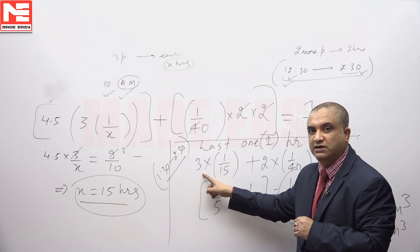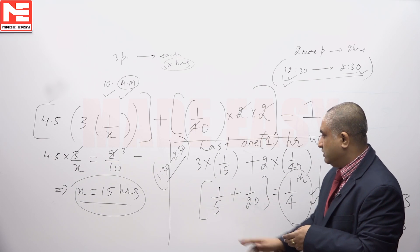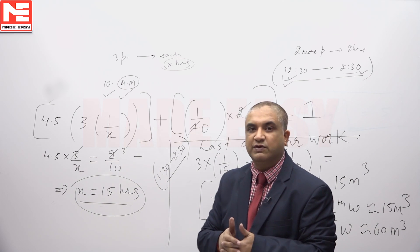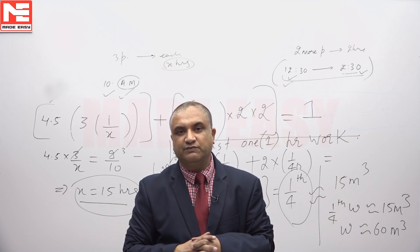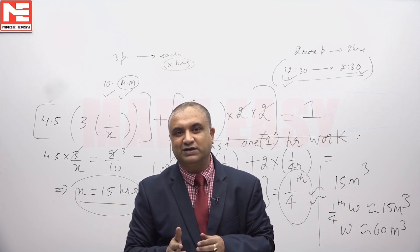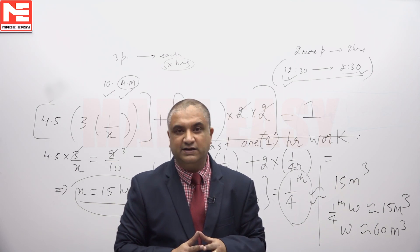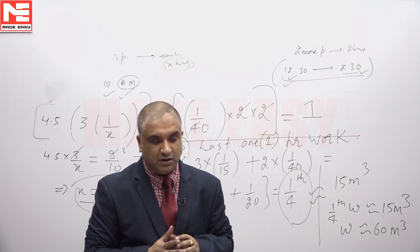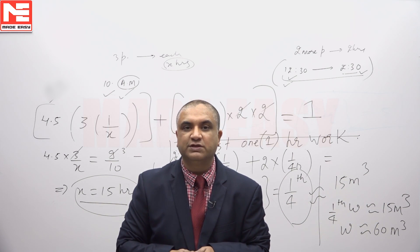All 5 pipes — 3 initial and 2 later — were into operation during the last 1 hour. The work done is 4/20 + 1/20 = 1/4. In terms of volume, this is equal to filling 15 cubic metres. So 1/4 of the work equals 15 cubic metres, and the total volume is 60 cubic metres. The answer: volume of the tank is 60 cubic metres.